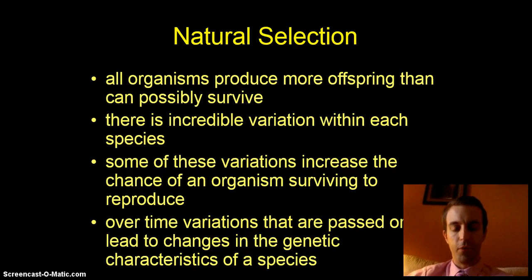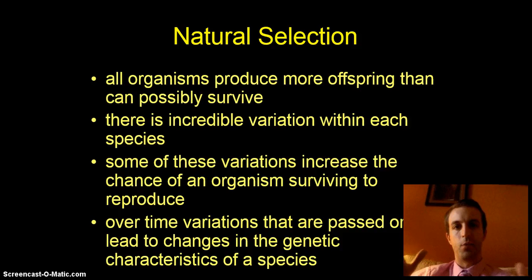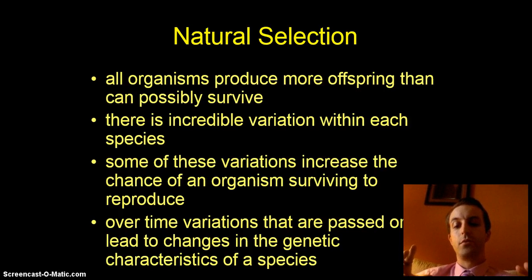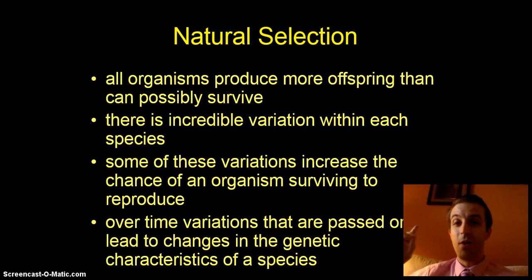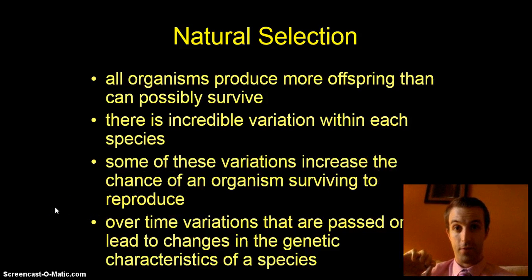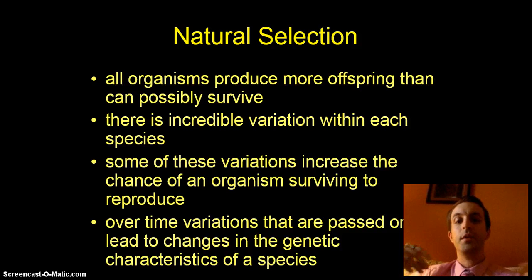Here are some bullet points. Part of the idea behind natural selection is that all organisms produce more offspring than are going to live. In nature, everything wants to kill you, so animals are going to die. And because you have the possibility of mutation, you also have the possibility of variation. Within each species you could have a big range of variation. Some of these variations are bad, some are neutral, but a very few of them are good — those are the ones that increase the chance of an organism to survive. If you have a good trait, there's more chance you will survive to reproduce, and over a long, long period of time, these good traits are passed on, leading to genetic changes in a species.